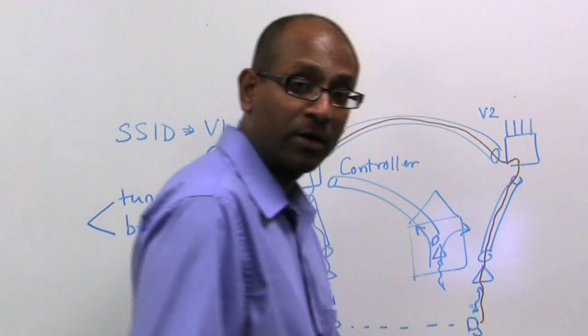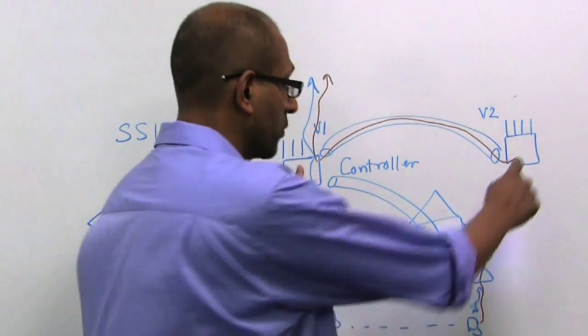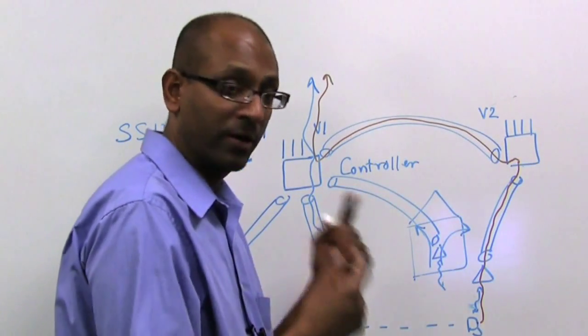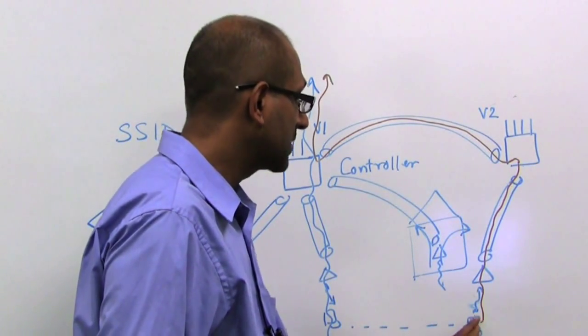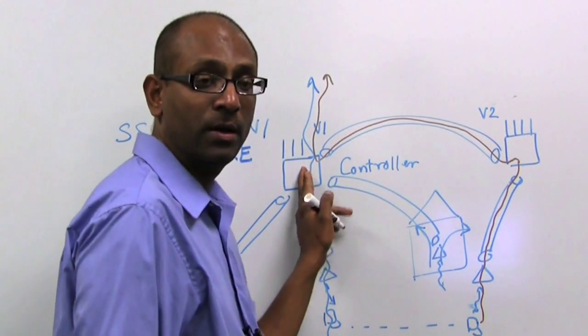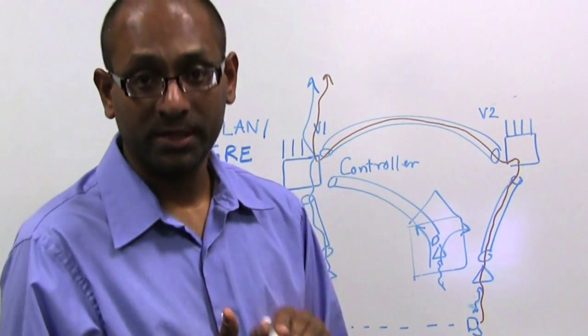As the client moves to a different controller domain, these controllers are talking to each other, so they figure it out, and packets are piped back to the original controller, and that way the client always retains the IP address.